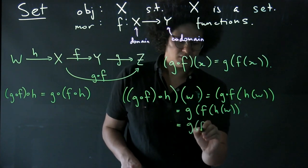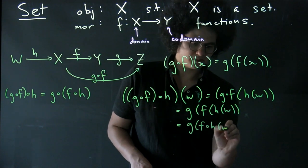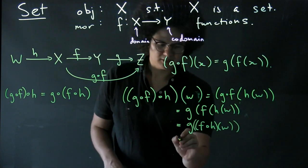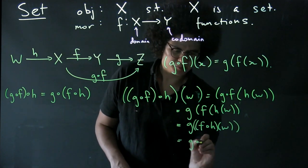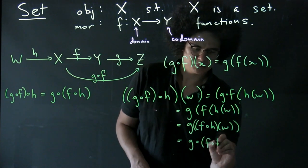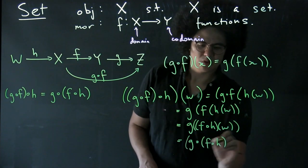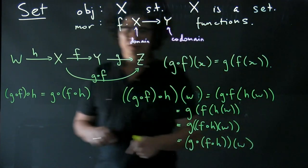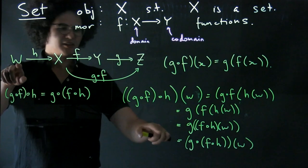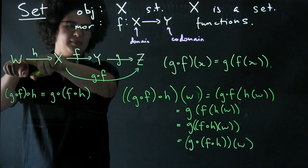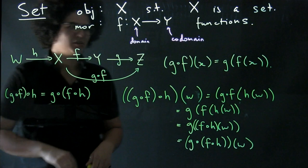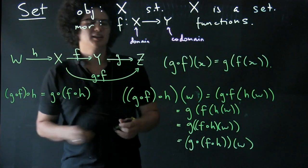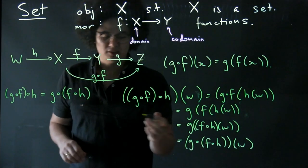And this is G applied to F∘H of W, which is (G∘F)∘H all applied to W. And as we know, if two functions have the same output for a given input from the domain, then they're the same function. So we have that composition of functions is associative.